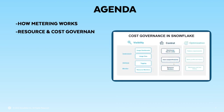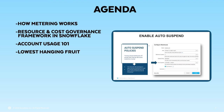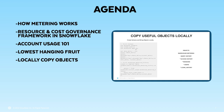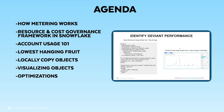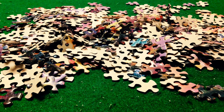What we're going to look at today: how metering works, the resource and cost governance frameworks in Snowflake, the account usage schema 101, the lowest hanging fruit in any Snowflake account, how to copy objects locally from account usage into your own account, how to visualize objects, perform additional optimizations, set up resource monitors, and how to use Snowsight. Snowflake gives you all the puzzle pieces you need to monitor your account — there are almost 45 different tables inside account usage. The aim of this session is to show you how to snap these pieces together into something more useful than the individual parts.